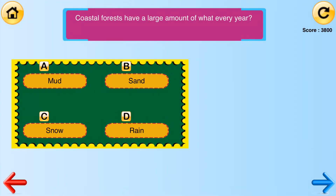Quiz question: Coastal forests have a large amount of what every year? The answer choices include mud, sand, snow, and rain. The correct answer is rain.